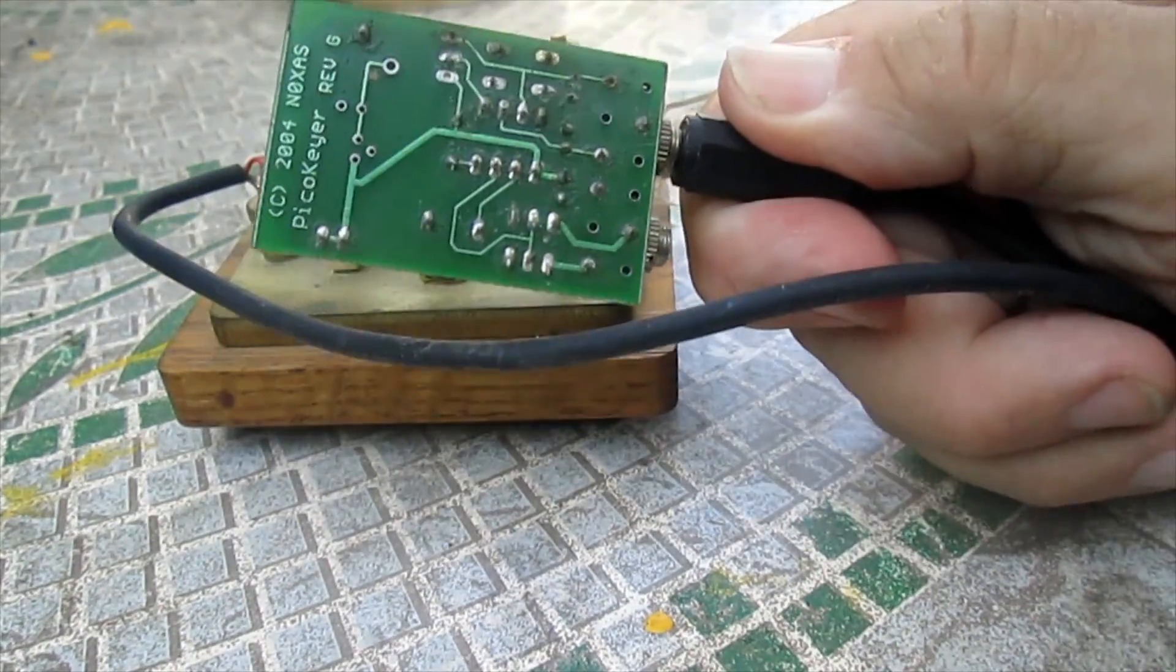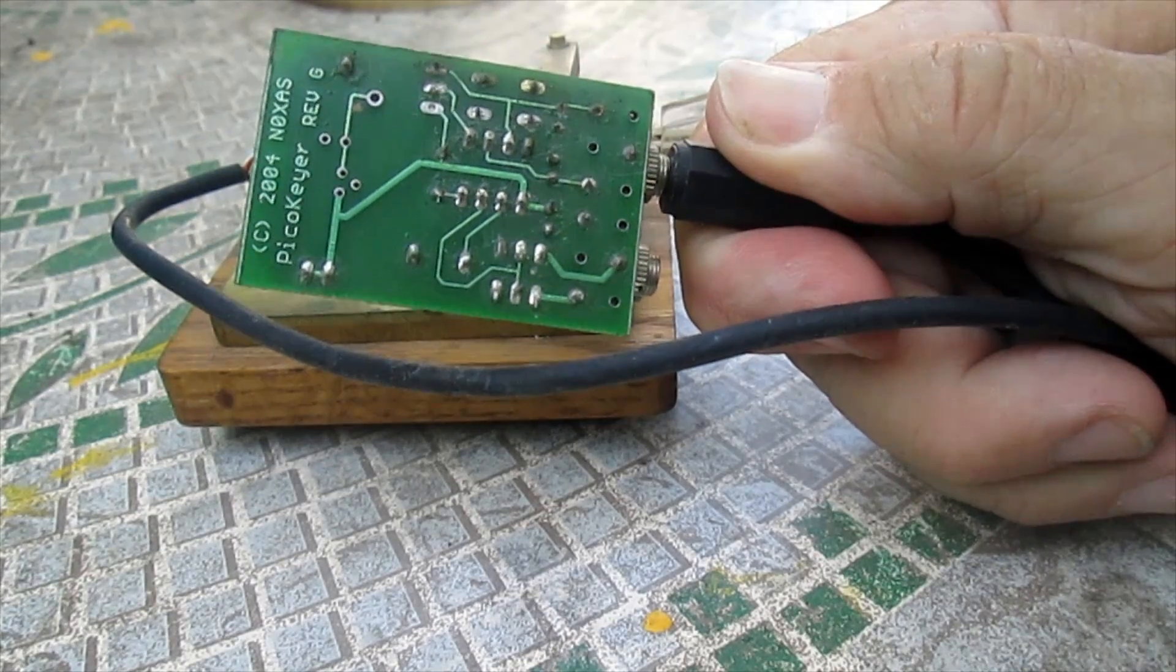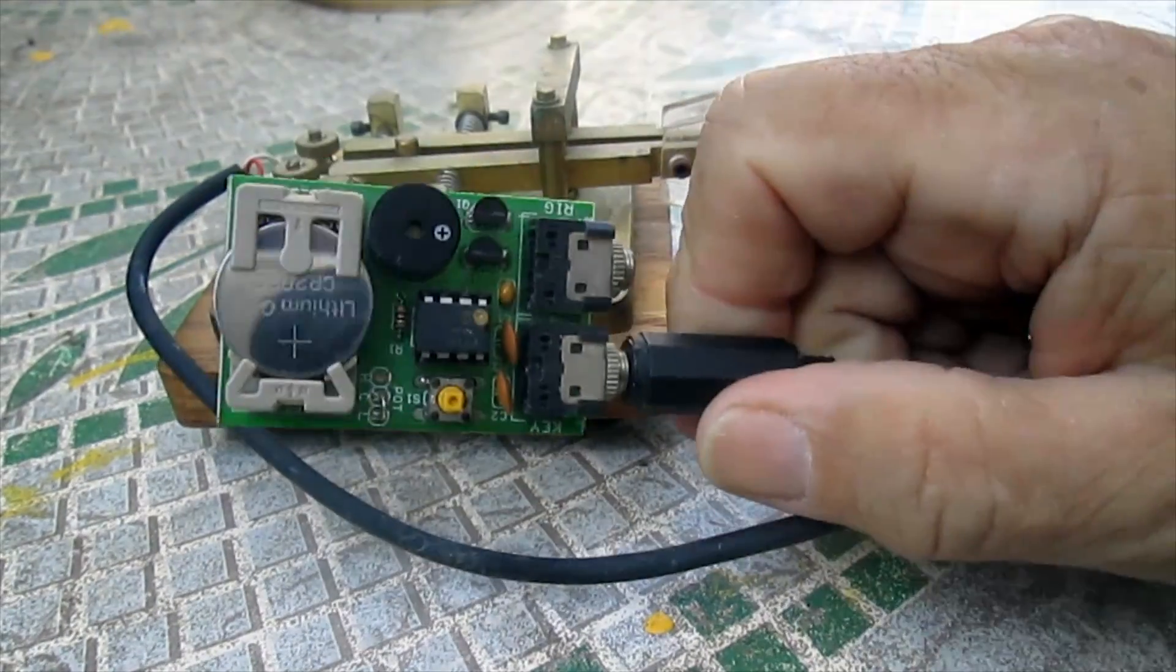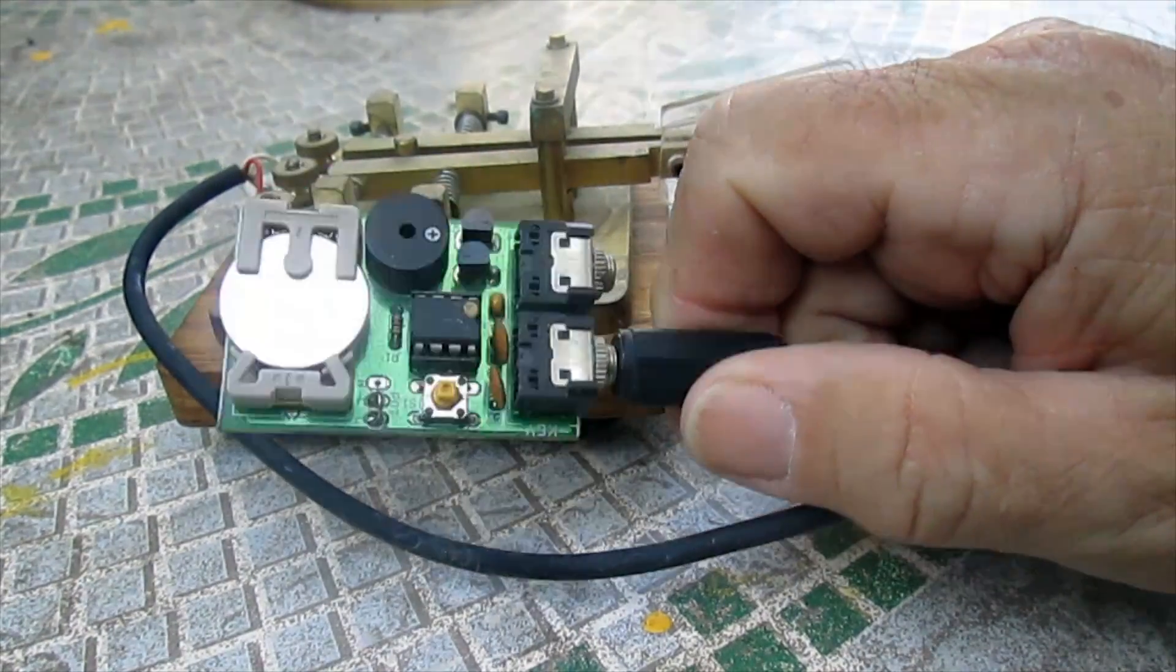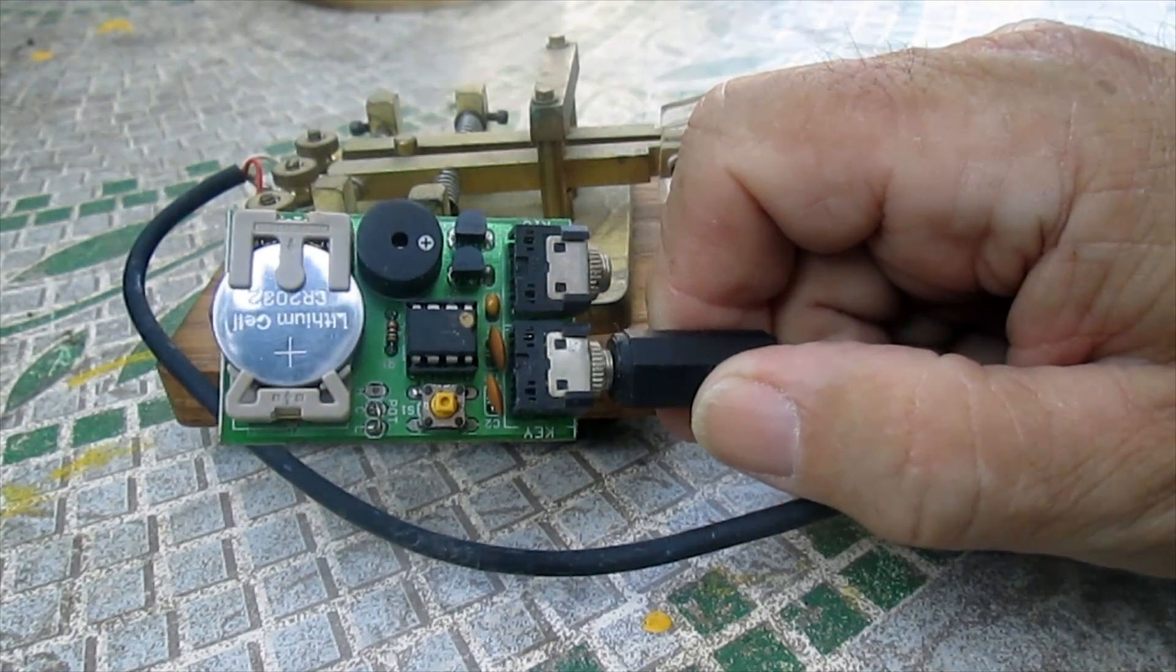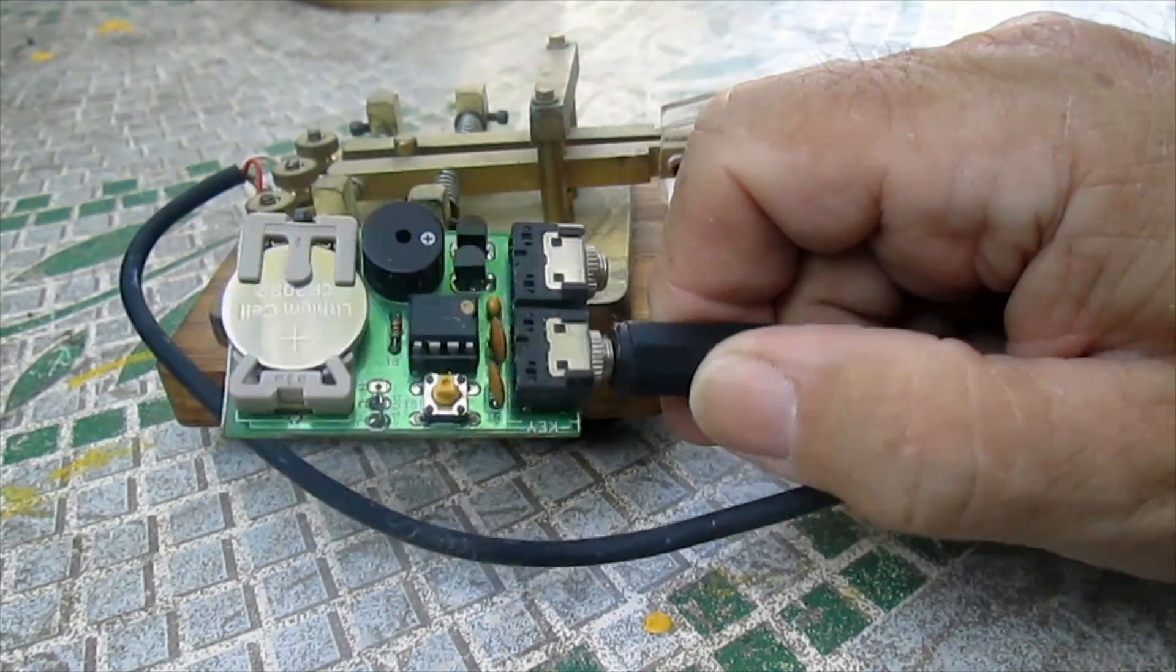This is a little kit. It's a pico keyer revision G, copyright 2004 by N0XAS. There are a number of types of keying chips like this. Sometimes they're even built into more expensive transceivers, and sometimes they're built into QRP kits, which are low power kits.